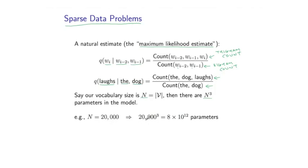As one example, if N is 20,000, then we have 20,000 cubed, that's around 8 times 10 to the 12 parameters. So even with the very large training sets that we use nowadays to estimate the parameters of a language model, this is a very, very large number.